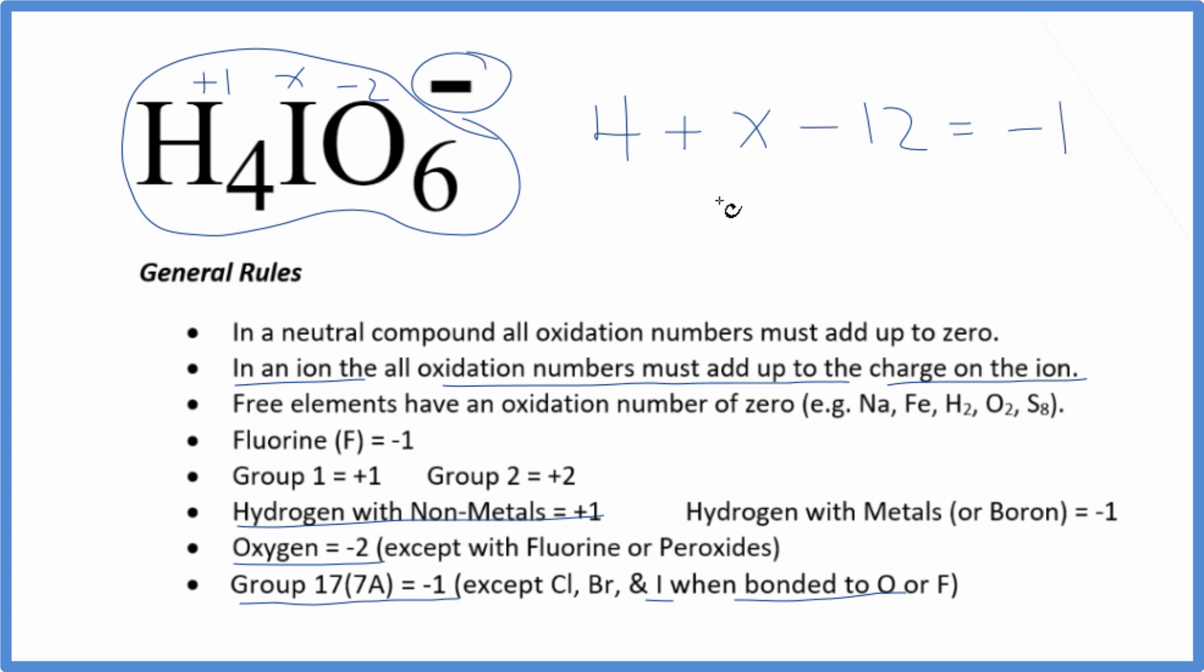Now we just solve for X. X minus 8 equals minus 1. Add 8 to both sides. X equals a positive 7. So the oxidation number on the iodine in H4IO6 minus is going to be positive 7.